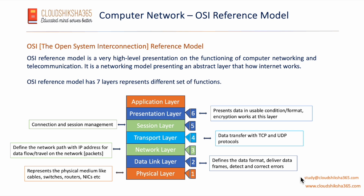The application layer is the top layer of the OSI reference model, known as layer 7. As the name suggests, this layer recognizes which application the received data belongs to — for example, is it email data, Microsoft Word data, Excel data, or a media file like MP3? The application layer identifies the application it belongs to. In short, it is the human-readable layer responsible for application interaction with the lower layers.